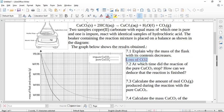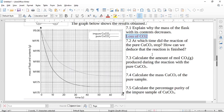Then it says to you, at what time did the reaction of pure copper carbonate stop? How can we deduce that the reaction is finished? So if you have a look here, we know the reaction is finished when the graph goes flat. There's one thing you must notice about this graph - even if they hadn't told you which was pure and which was impure, you can actually figure it out because pure substances always react faster than impure substances.